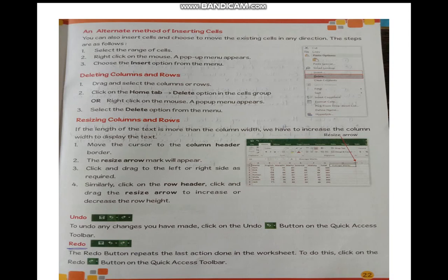How you can delete your row and column: drag and select the column or row, click on the Home tab, the delete option will be in the cell group, right-click on the mouse, a pop-up menu appears, then press delete. Then resizing your column — you can make your column size big or small. Then undo and redo command.